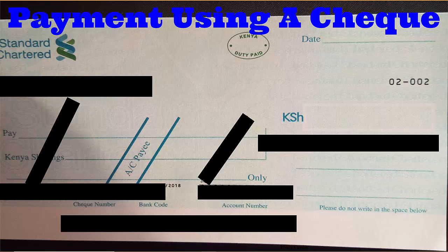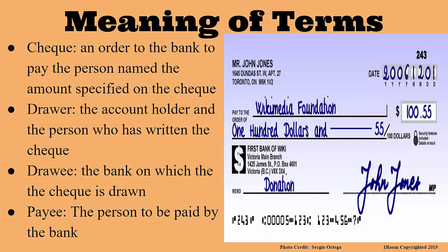Okay, I don't know anything about cheques. What are they? So, a cheque can be described as an order to the bank to pay the person named the amount specified on the cheque. Wow. So different from a piece of paper.